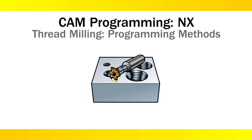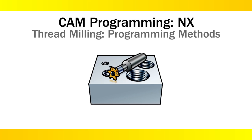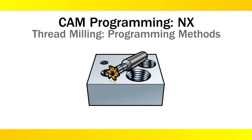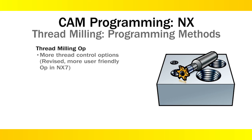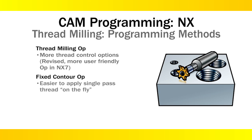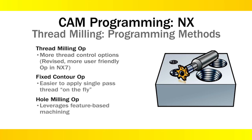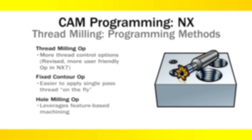To CAM program this technique in Siemens NX6 CAM software, there are two primary choices: the thread milling operation, or manually driving the toolpath with a fixed contour operation. Note that in NX7.5, there is also a hole milling operation used for creating threads, which is ideal for feature-based machining, as well as an updated thread milling operation with a more user-friendly interface.